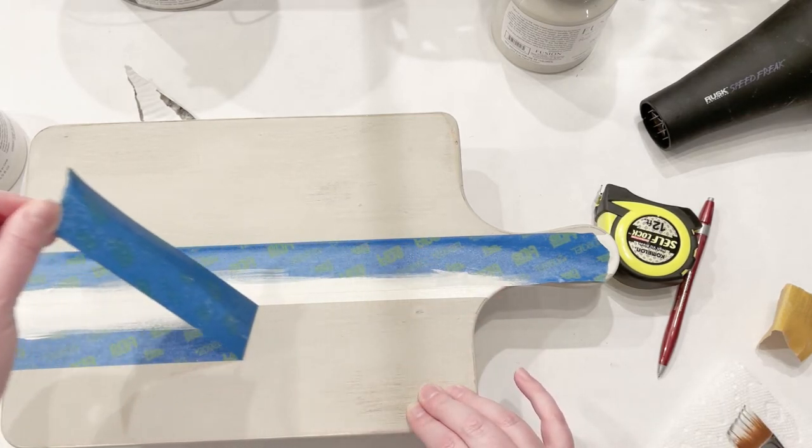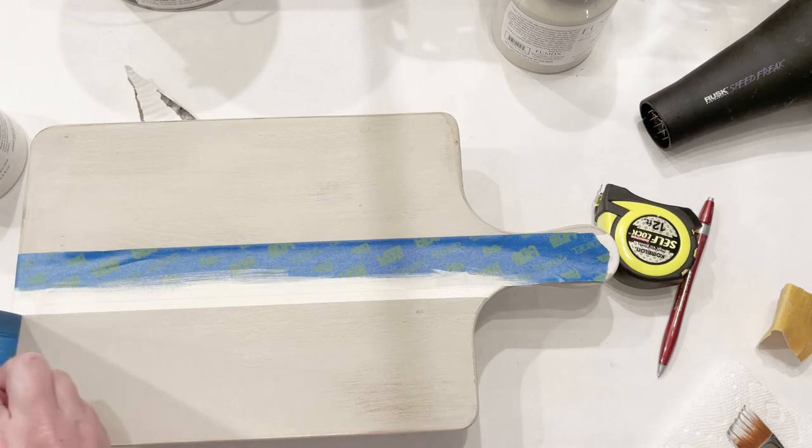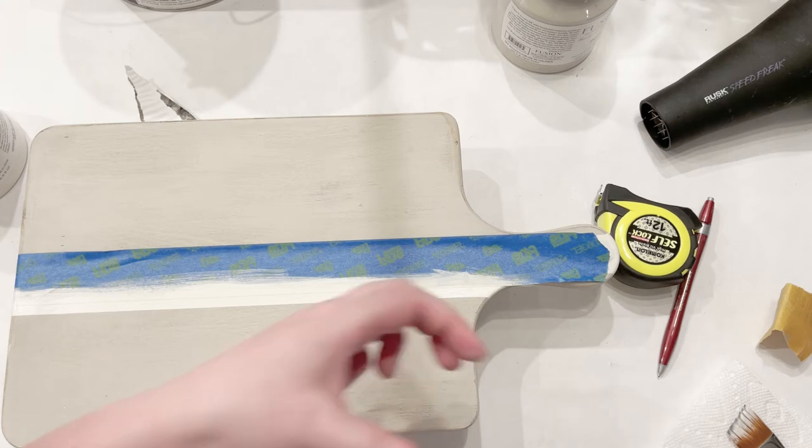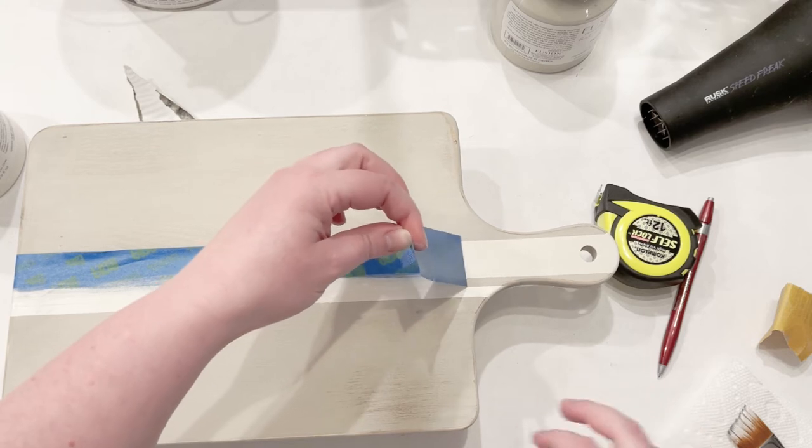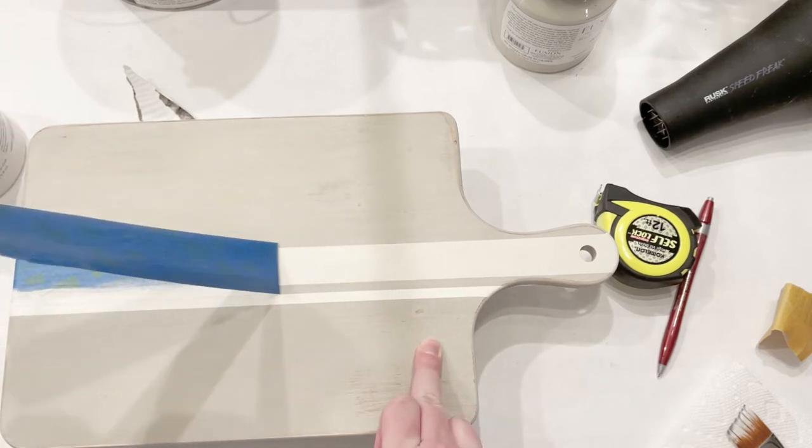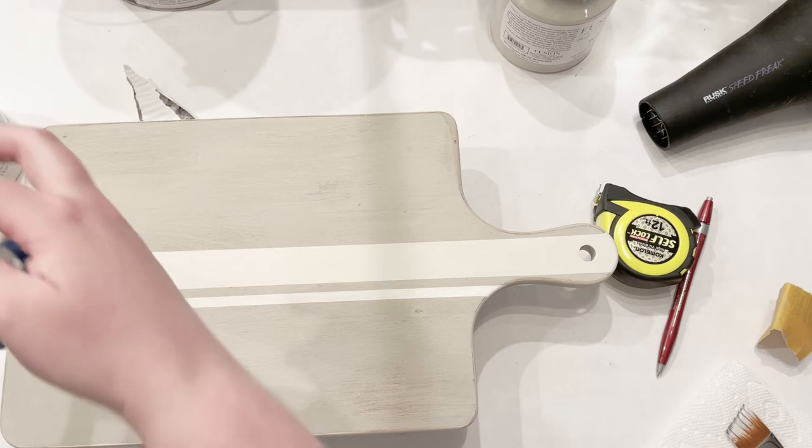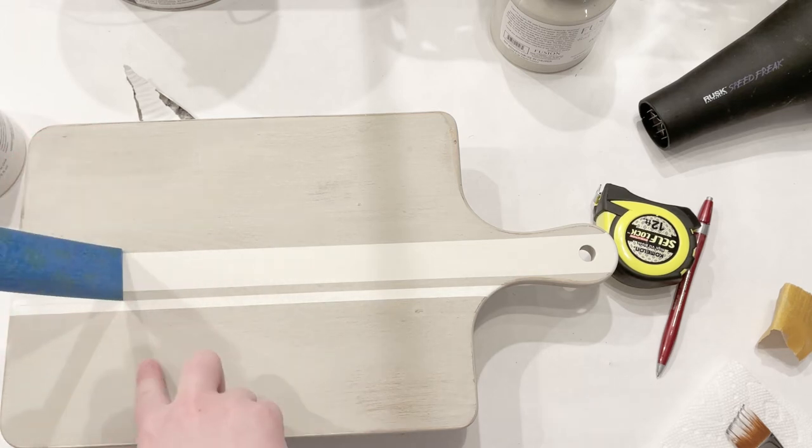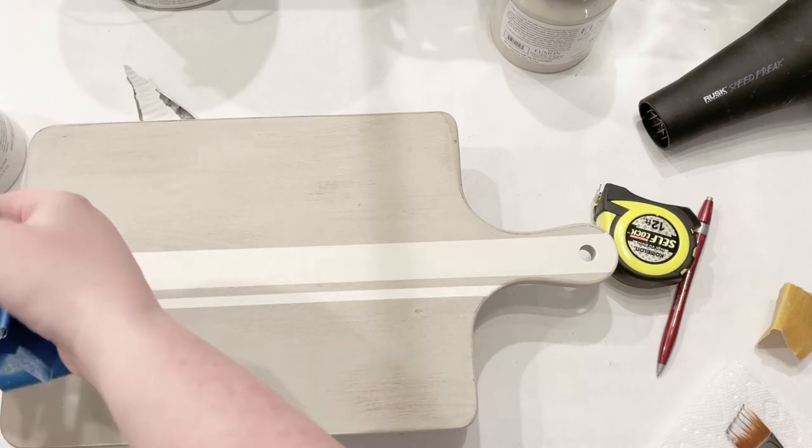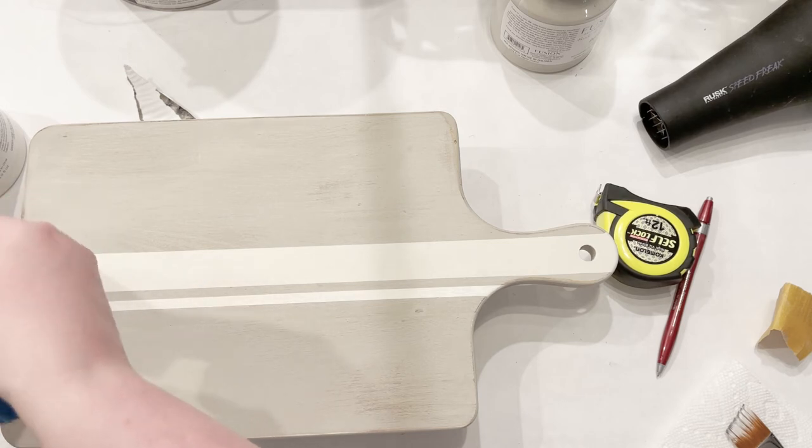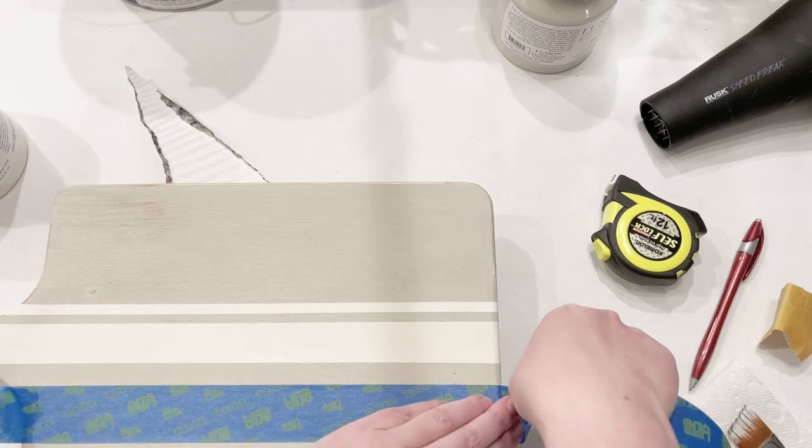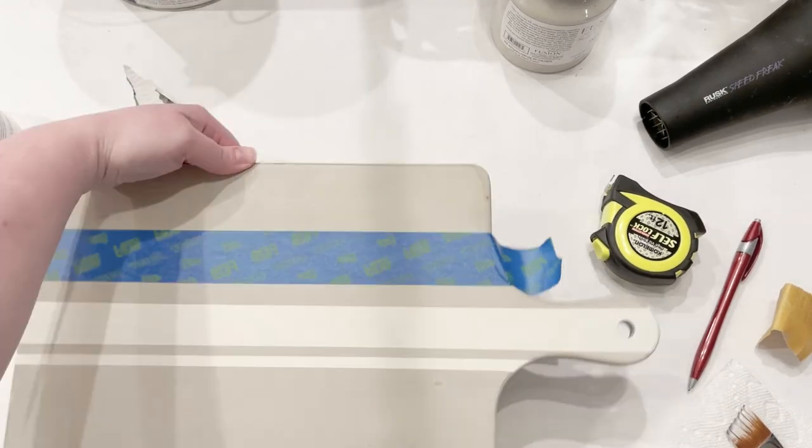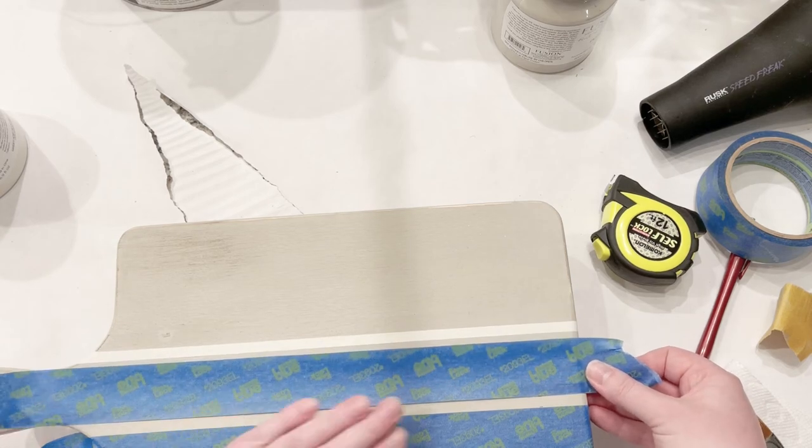Removing the tape is my favorite part. I love seeing how perfect that line looks when you pull off that tape. Once that side is good and dry, I'm going to do the exact same thing and we're going to make our last stripe on the other side.